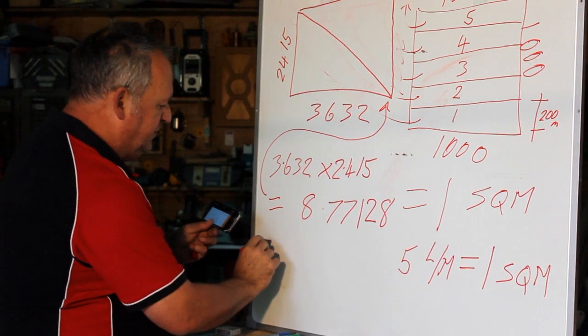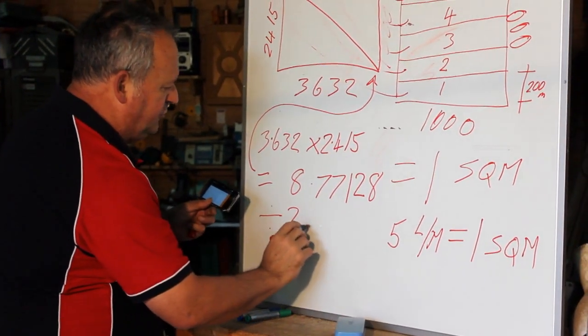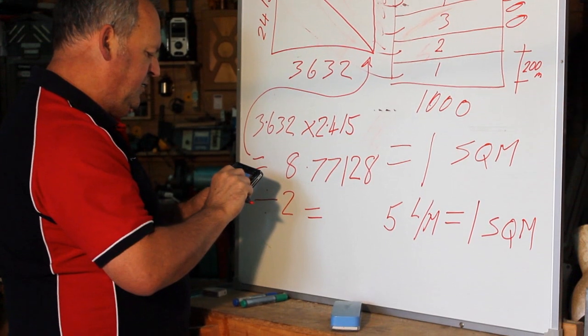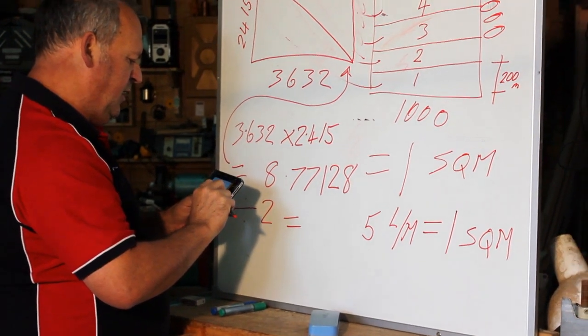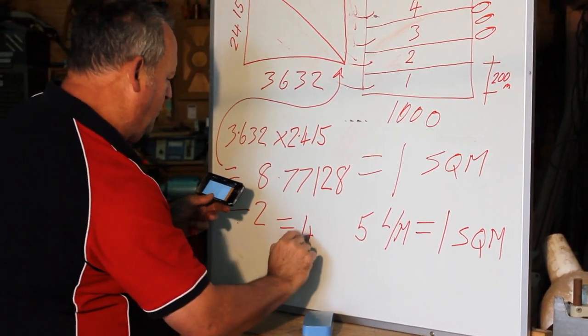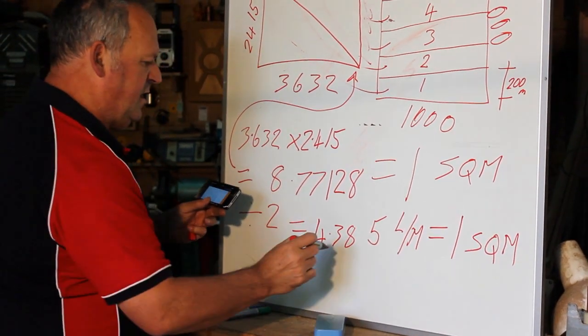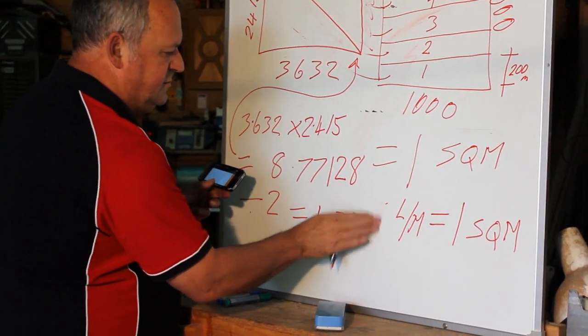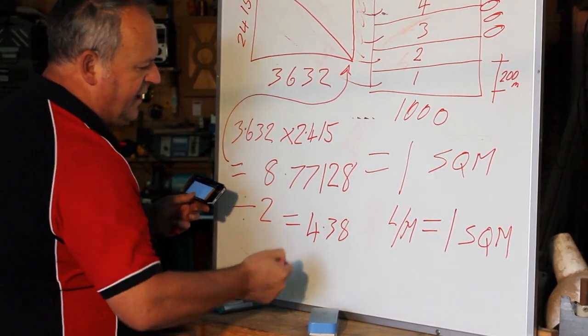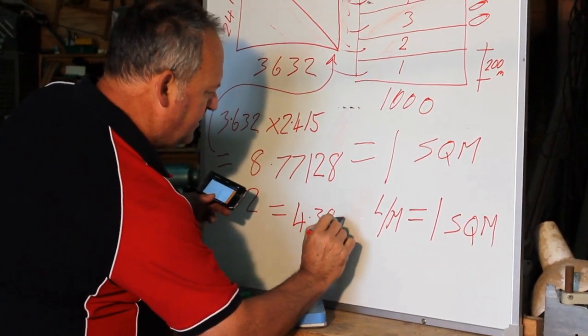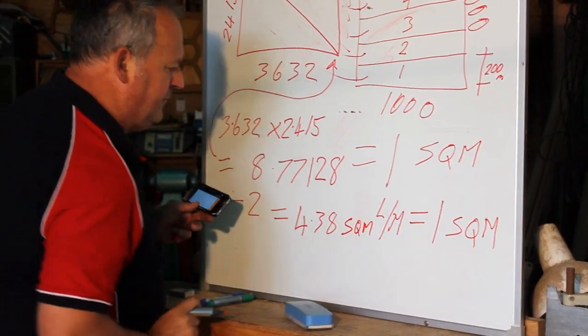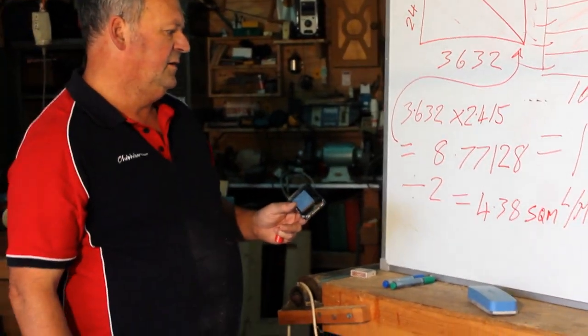So, we divide it by 2 equals 4.38 square metres. Get rid of that, that's a bit clearer. 4.38 sqm square metres.